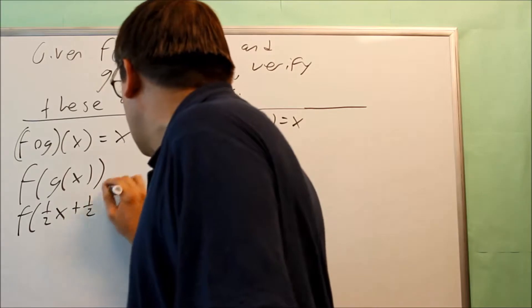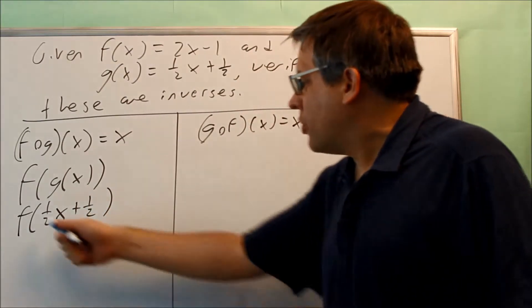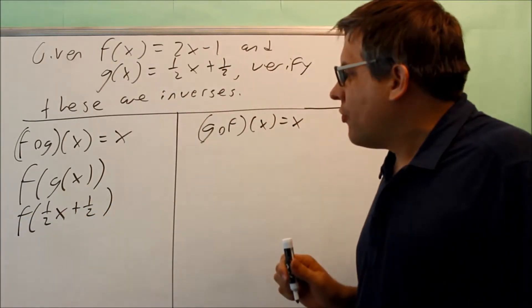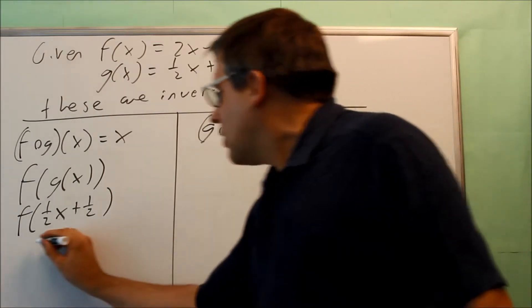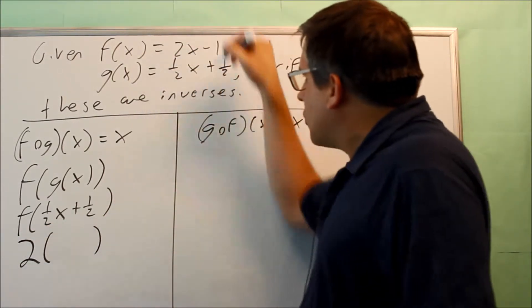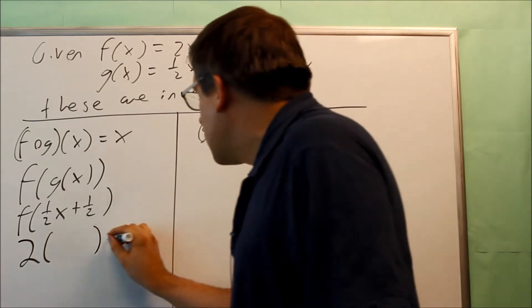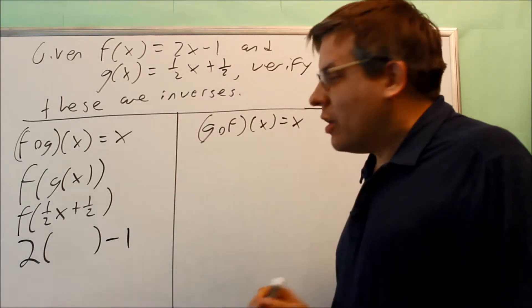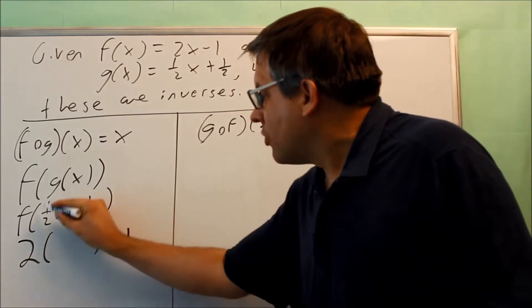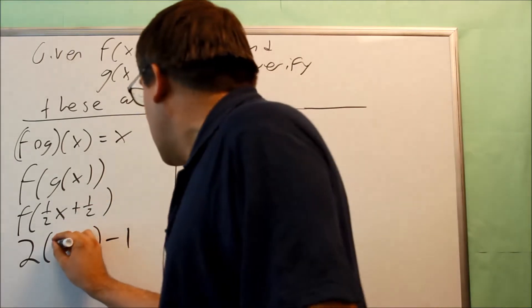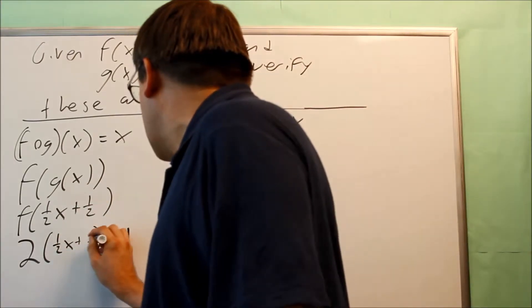One-half x plus one-half. That's telling us we have to put this into the f function. So that's two, and then I'm taking out the x that was originally in the f equation, and then I have minus one. The x gets filled in with this, one-half x plus one-half.